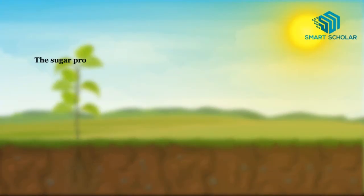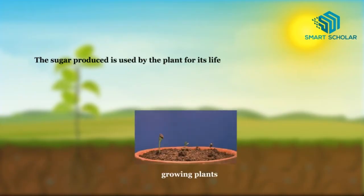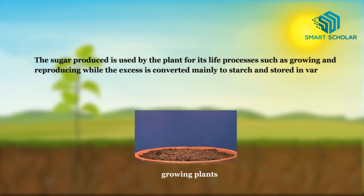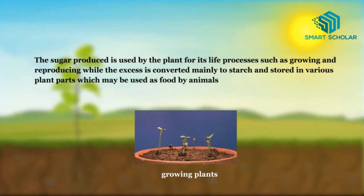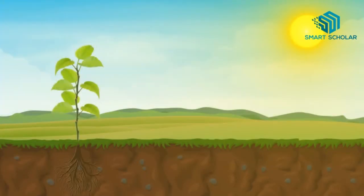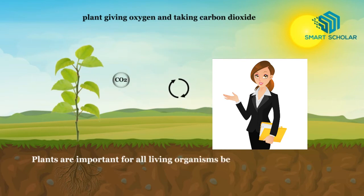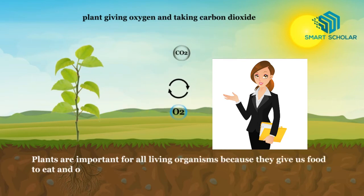The sugar produced is used by the plant for its life processes such as growing and reproducing, while the excess is converted mainly to starch and stored in various plant parts, which may be used as food by animals and humans. Plants are important for all living organisms because they give us food to eat and oxygen to breathe.